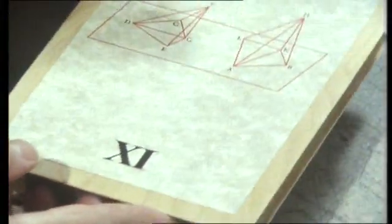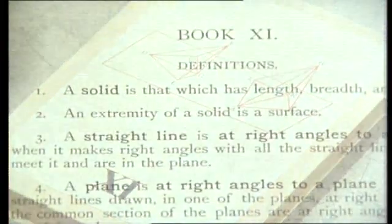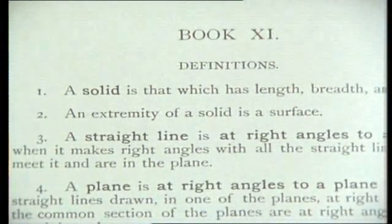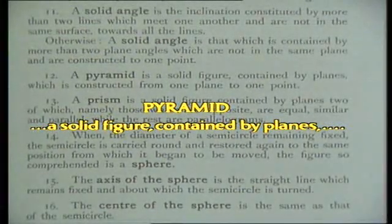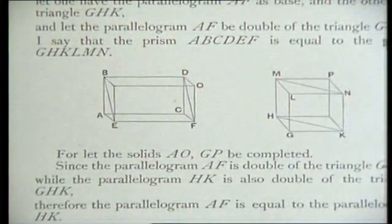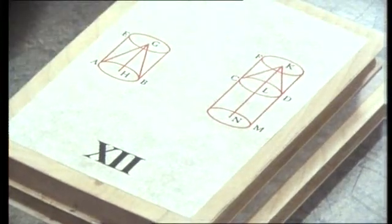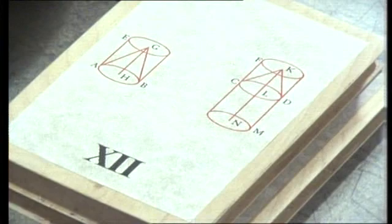Now we come to the last four books. Book 10 is related to Book 13, the last book, so let's look at Books 11 and 12 next. Book 11 deals with solid three-dimensional geometry, and it starts with 28 new definitions. For example, here's the definition of a pyramid as a solid figure contained by planes. Here Euclid makes comparisons between the volumes of different shaped figures with straight edges. Book 12 extends this to the comparison of areas and volumes of curved figures, such as circles, cones, and cylinders.